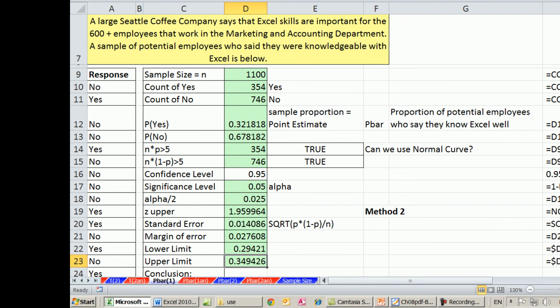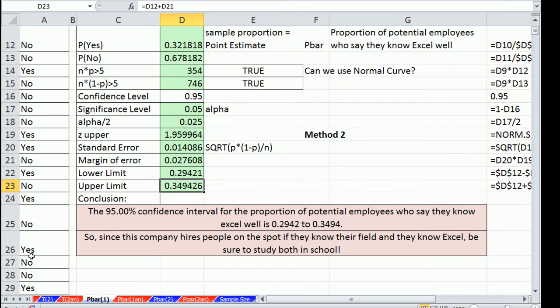OK, so now we have an estimate, our conclusion. The 95% confidence interval for the proportion of potential employees who say they know Excel well is 0.2942 to 0.34. So about almost 30% to almost 35%, so 30% to 35%. Somewhere in that interval, we're estimating at 95% confidence that our population proportion exists.